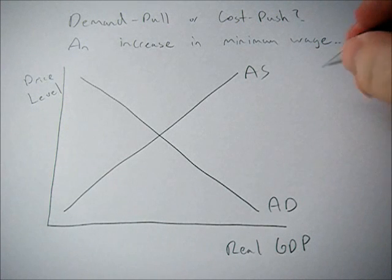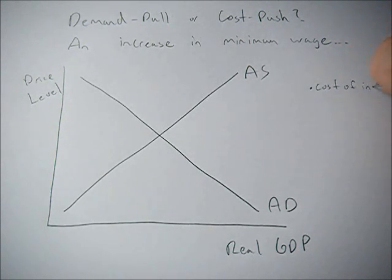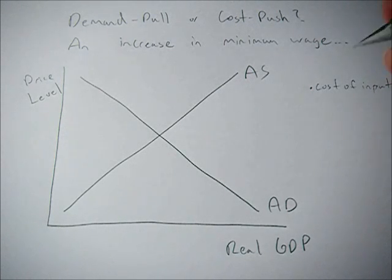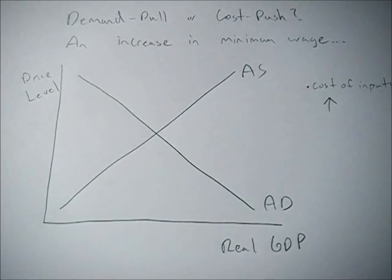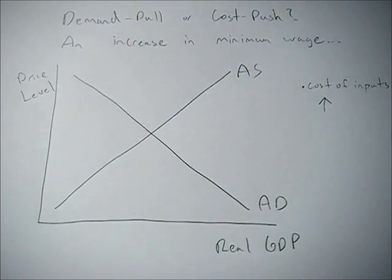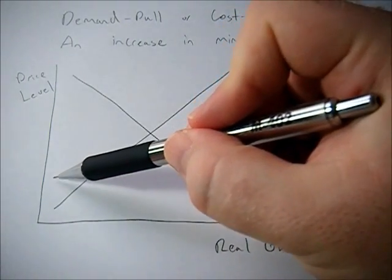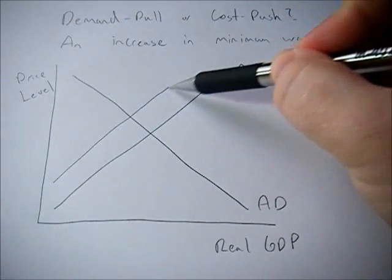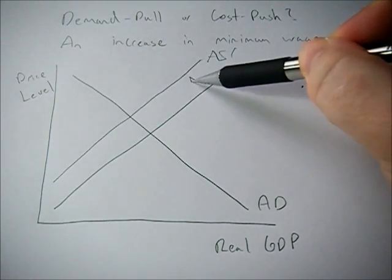When minimum wage goes up, the cost of inputs goes up. Because labor is an input in a lot of production processes, when the cost of labor goes up, the cost of inputs goes up, and that's going to decrease aggregate supply — or shift it left.